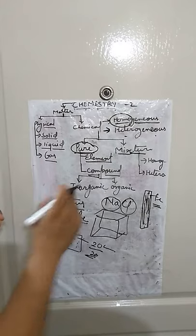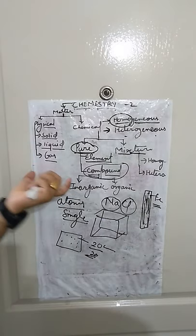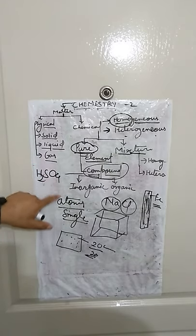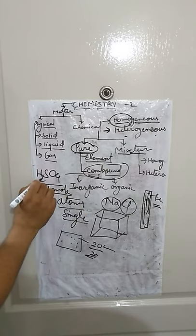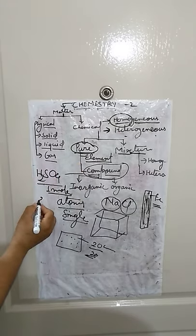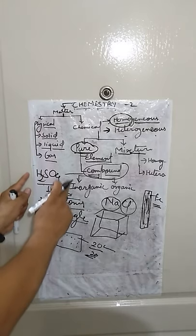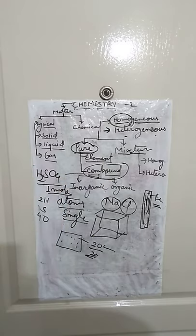But every substance in which different types of atoms are present — but you have complete information about its composition — that is a compound. For example, sulfuric acid H₂SO₄: in one molecule of H₂SO₄, there are 2 hydrogen atoms, 1 sulfur atom, and 4 oxygen atoms. You have complete data about it — nothing is missing. So this is called a compound, and it comes under pure substances. If you didn't know what else was present along with H₂SO₄, you could never classify it as pure.